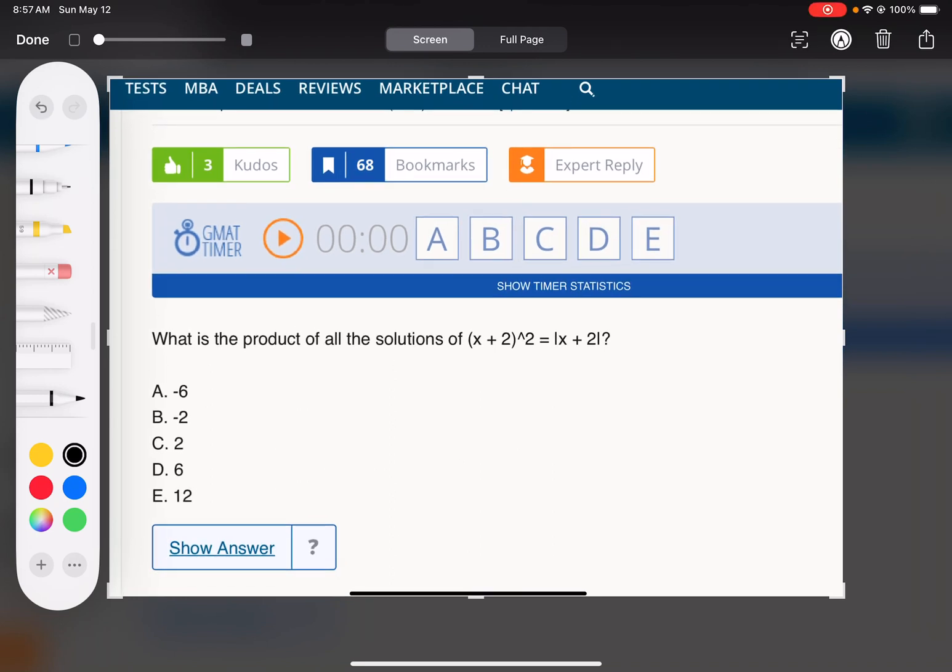Okay, a couple things you could do here, but probably the best way to organize your thoughts is to think how do I get something squared to equal absolute value something. Basically, how does x squared equal absolute value x?